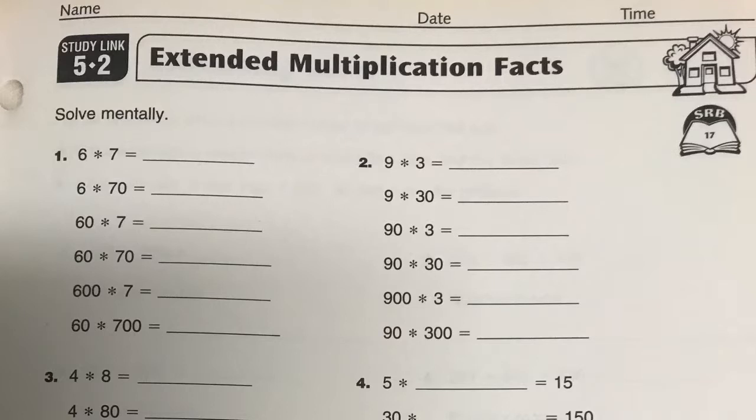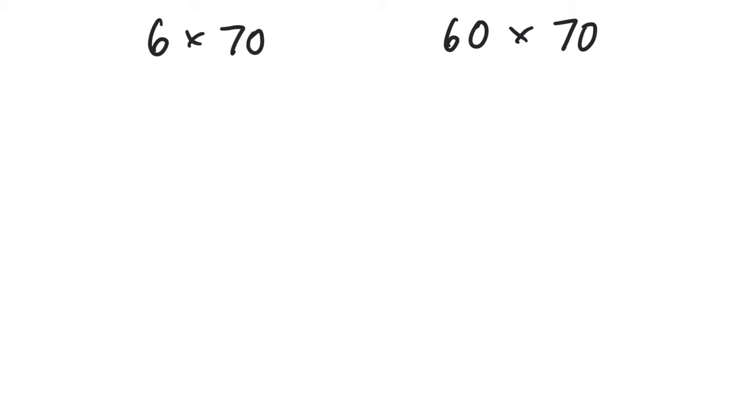So for example, we know 6 times 7 is 42. But what about 6 times 70, or 60 times 70? Well, what you can do is break down 70 into 7 times 10, right? So then you have 6 times 7, which is 42, and 42 tens, or 42 times 10 is then 420.